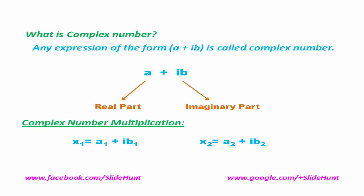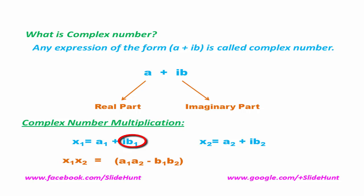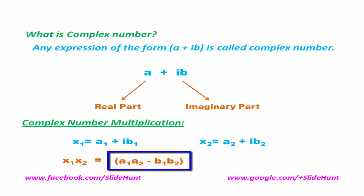Now we multiply these two complex numbers. X1 times X2 equals the real part of the first complex number multiplied with the real part of the second complex number, that is A1 times A2, then minus the imaginary part of the first complex number multiplied with the imaginary part of the second complex number, that is B1 times B2. This is the real part of X1 times X2.